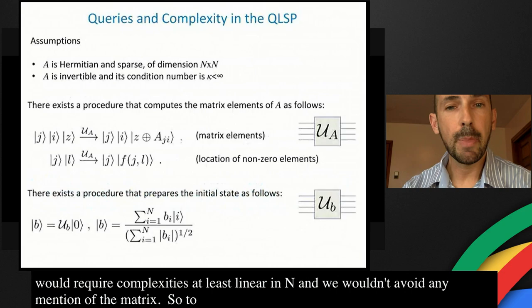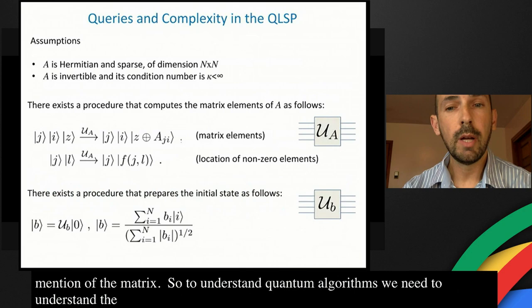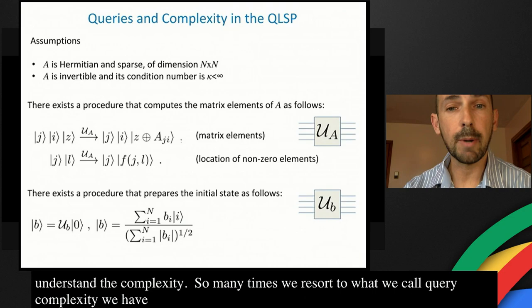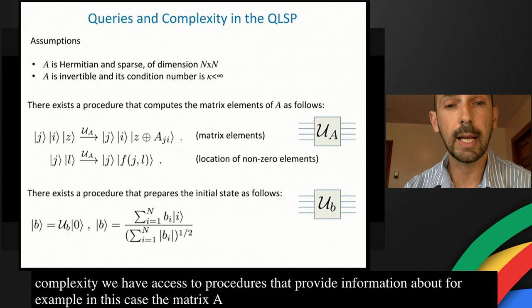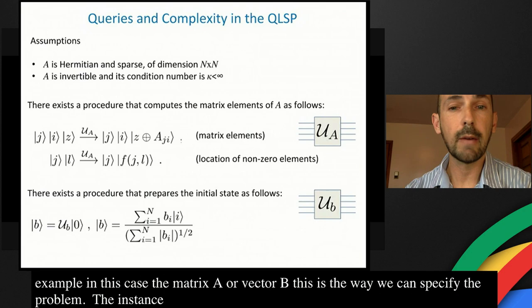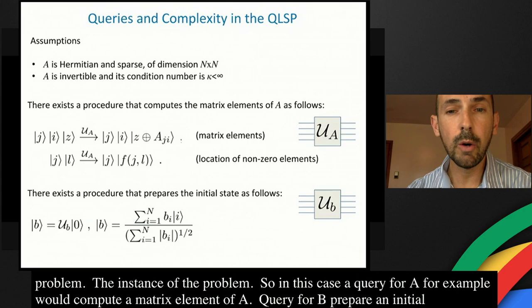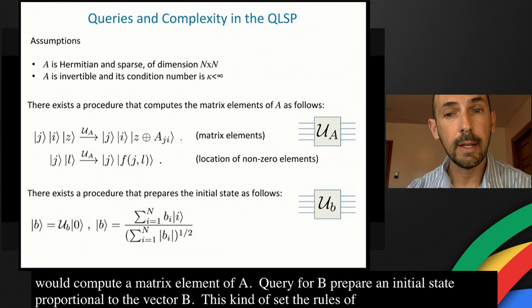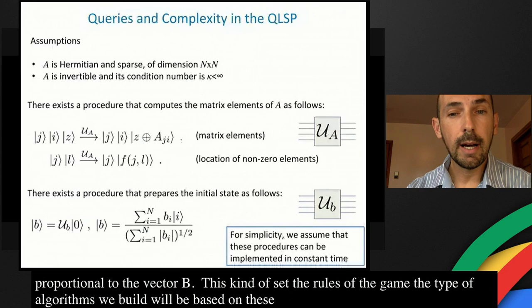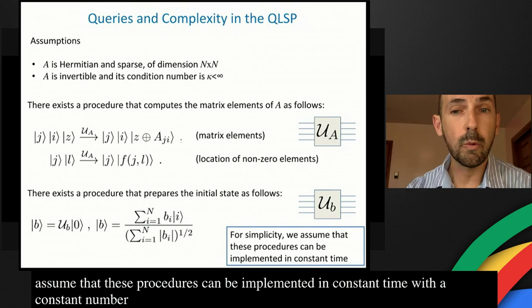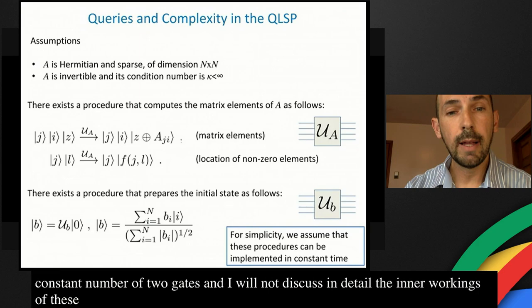To understand quantum algorithms, we need to understand complexity. Many times we resort to query complexity, where we assume access to procedures that provide information about the matrix A or vector B. A query for A computes a matrix element of A; a query for B prepares an initial state proportional to the vector B. This sets the rules of the game. For simplicity, I will assume these procedures can be implemented in constant time with a constant number of two-qubit gates.